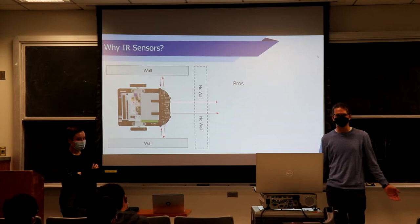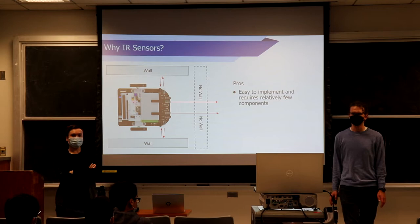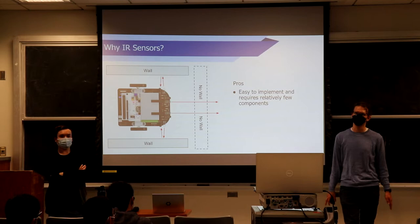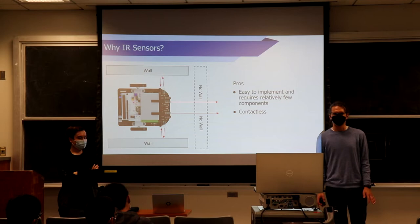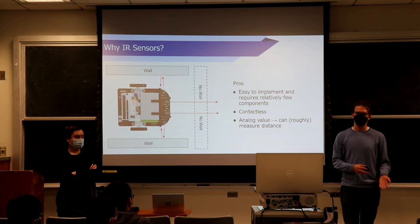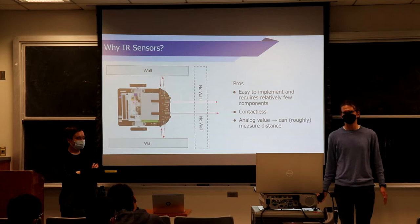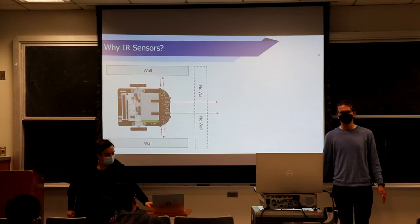That will be very useful for us when we get to navigating through a maze. What are some pros of IR sensors? Well, they're easy to implement — doesn't require that many components. It's small; it all fits on the MicroMouse very well. Also, it's contactless. We don't actually have to touch the wall. We can just see if the wall's there or not. And also, it's an analog value — it's not just true or false. We can get a sense of distance: are we very close to the wall, or not?